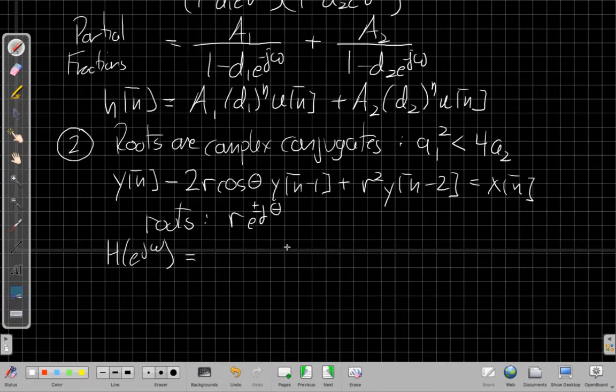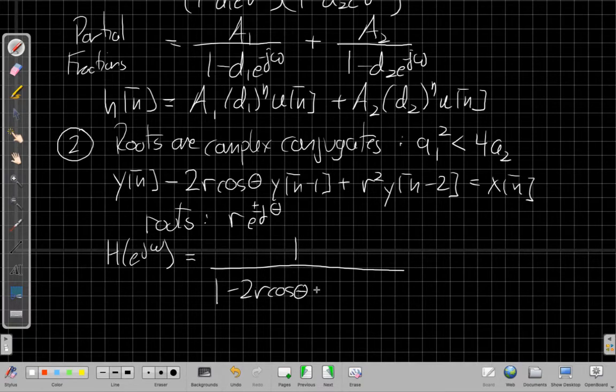Alright, so H of e to the j omega, assuming you're back from pausing and testing your Fourier transform muscles a little bit, it'll be 1 divided by 1 minus 2r cos theta e to the minus j omega and then plus r squared e to the minus j 2 omega.